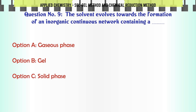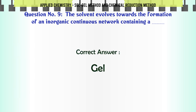The solvent evolves towards the formation of an inorganic continuous network containing: A. Gaseous phase, B. Gel, C. Solid phase, D. Semi-solid phase. The correct answer is Gel.